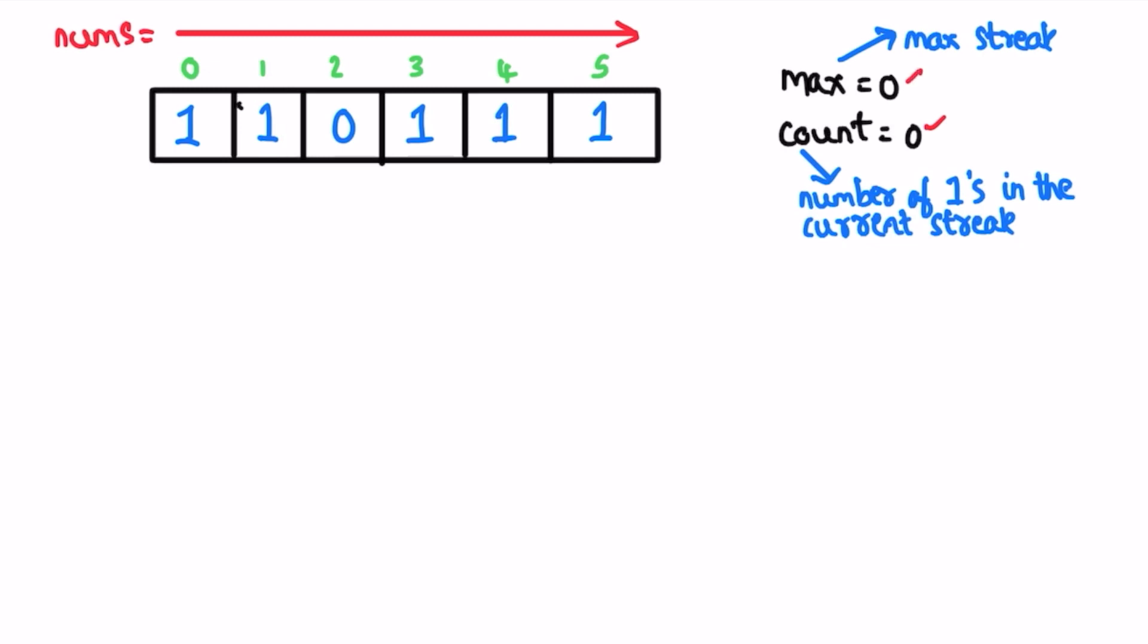We finally return max as the output. So we start from i equals zero. The element at zero is one, so increment count. We also check max of max and count. Max of one comma zero is one, so set max also to one. Then we go for the next element. The next element is also one, so increment count.